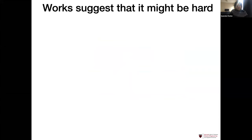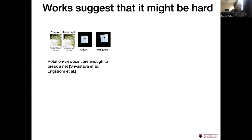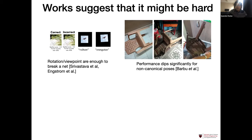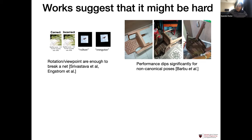Some recent work suggests this might not be straightforward. There are works that looked at rotation and viewpoints, slight shifts in images, and show that networks are very brittle to these shifts. You can rotate the image in 2D, or shift by one or two pixels, and that can break the network. There's also recent work from MIT which looked at this in 3D — the ObjectNet paper — where they collected objects in non-canonical 3D poses and found a huge dip in performance. While 2D transformations are addressable with data augmentation, the 3D case is not, because you can't augment with 3D transformations.